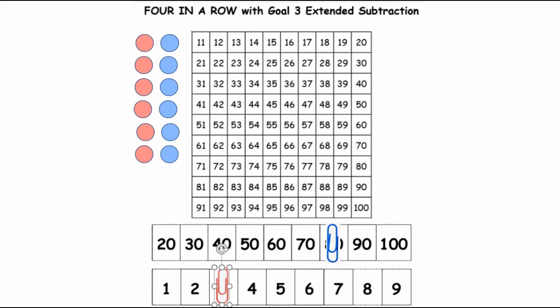And so now I get to think about what's 80 minus 3. Okay, so if I'm a red marker, then 80 minus 3 is 77. So I color that in or cover that up, and my turn is over.